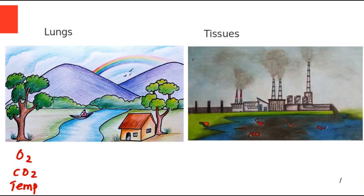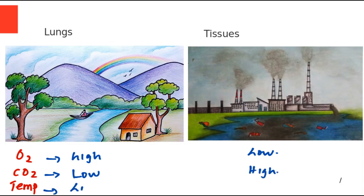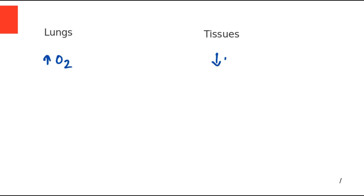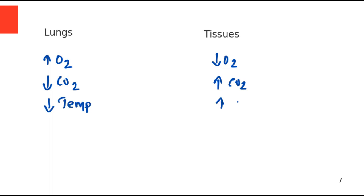In the lungs, which is like a village, the oxygen amount is very high, and in the tissues it is low. Similarly, carbon dioxide in the lungs will be low and in the tissues it will be high. Temperature will be low in the lungs and high in the tissues. Let's make a table: oxygen availability is high in lungs and low in tissues; carbon dioxide is low in lungs and high in tissues; temperature is low in lungs and high in tissues.